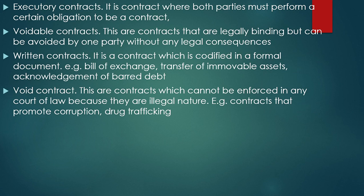An executory contract is a contract where both parties must still perform certain obligations for it to become binding. Both parties must perform in accordance with the contract for it to be enforceable. An avoidable contract is one that is legally binding but can be avoided by one party without legal consequences — for example, if a party identifies there was misrepresentation, or the contract was not free, fair, or transparent.